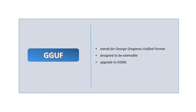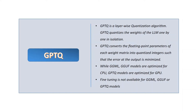GPTQ is a layer-wise quantization algorithm. It quantizes the weights of the LLM one by one in isolation, converting the floating point parameters of each weight matrix into quantized integers, such that the error at the output is minimized. While GGML and GGUF models are optimized for CPU, GPTQ models are optimized for GPU. Note that fine-tuning is not yet available for GGML, GGUF, or GPTQ models, as of this date.